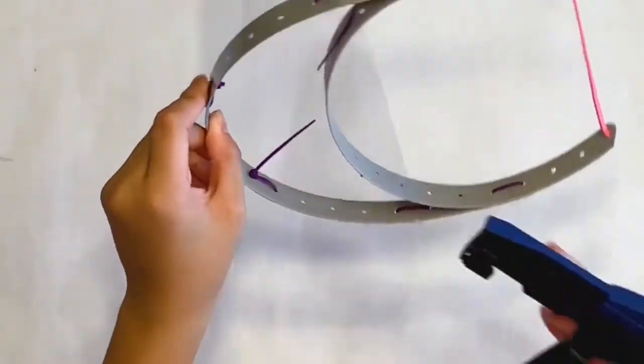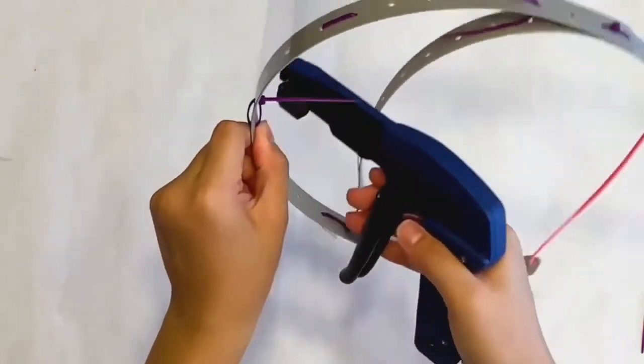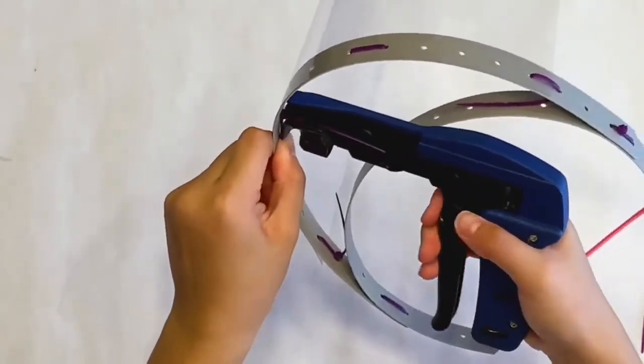So now you can just take your zip tie cutter and cut off the excess of the zip ties. You can also use scissors for these as well.